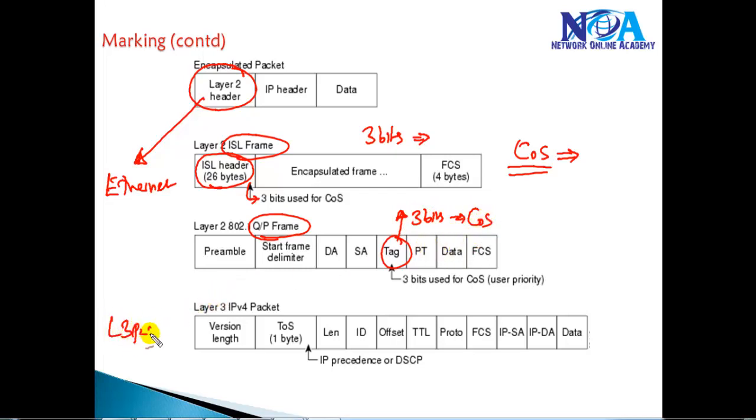If you are using any layer 3 packets, in case of layer 3 packets we have a separate field called type of service, and inside that type of service there are two different types of marking values we can use: IP precedence or DSCP. DSCP is somewhat advanced marking values which can provide some more options when compared with IP precedence. More on this layer 2 and layer 3 markings, like how they are differentiated, we'll be discussing much more in detail in our next section.